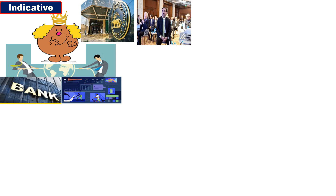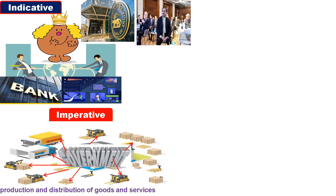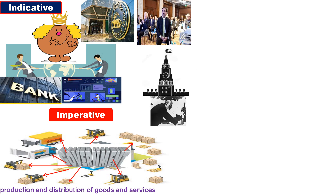Indicative planning is used in a mixed economy. Imperative planning means the total price mechanism is under the control of the government — the government fixes all land, labor, and capital. The whole factor of production is executed by the government. This is the central plan.